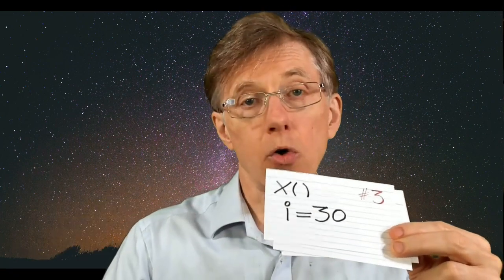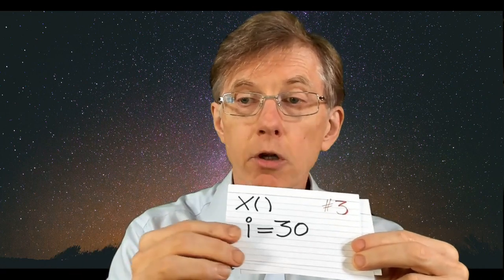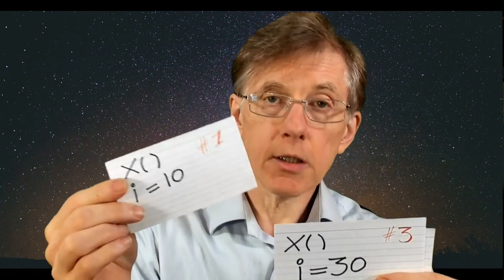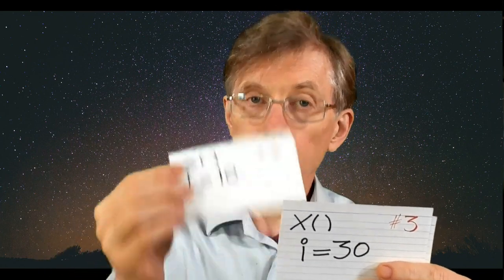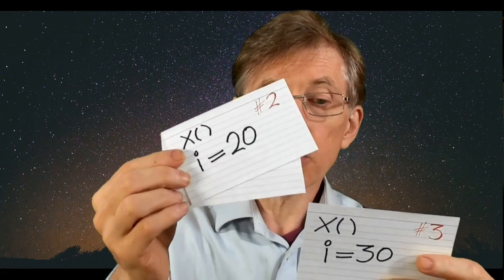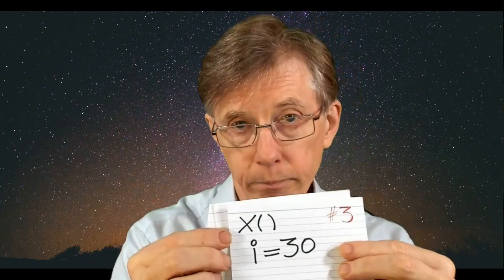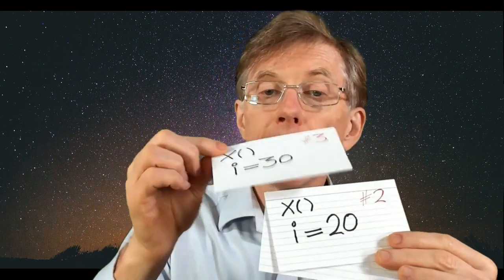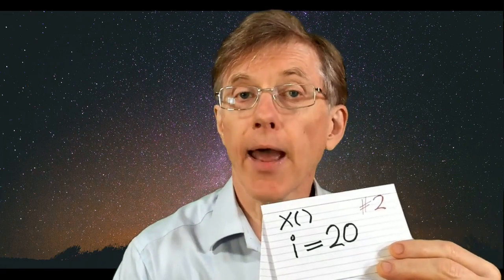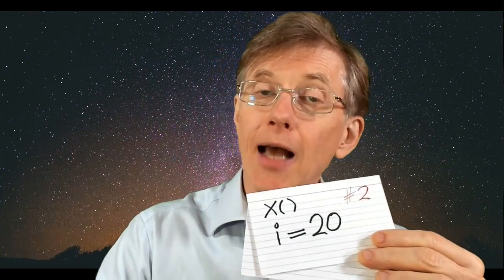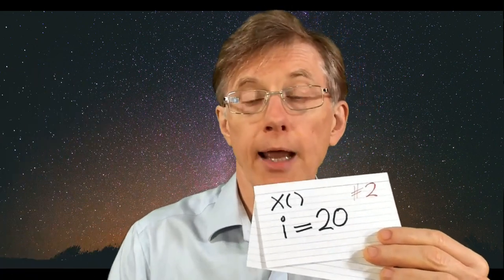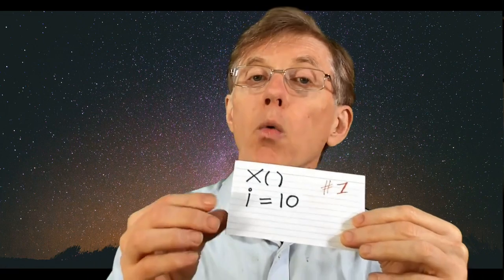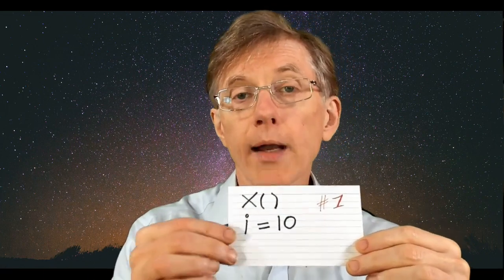These work just like ordinary function calls. If function X contains a local variable I which starts with the value 10, and that's incremented each time the function is called — well, when X calls itself the first time, I becomes 20, and it calls itself again, I becomes 30. When X three's stack frame is popped off the stack, we go back to the state of X two, which is 20. When that recursive function call exits, we're back to the state of X when it first ran, when I was 10.